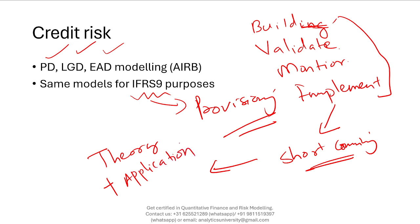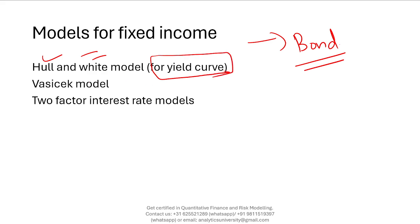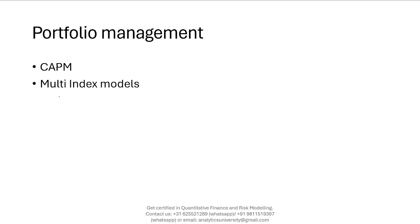In fixed income, bond pricing is a broad topic. In the financial literature you have the Hull-White model for yield curves, the Vasicek model, and various interest rate models — understanding these three should be sufficient. For portfolio management, the Capital Asset Pricing Model (CAPM) is a very important simple model. Multi-index models are also quite interesting; compared to CAPM, multi-index models address some of CAPM's weaknesses.